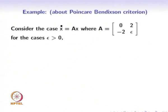Next, we will consider an example of the Poincaré-Bendixon criteria. We take a system of the form x_dot = Ax, where A has diagonal elements 0 and ε. As ε varies, the behavior of the system changes. We consider three cases: ε > 0, ε = 0, and ε < 0.